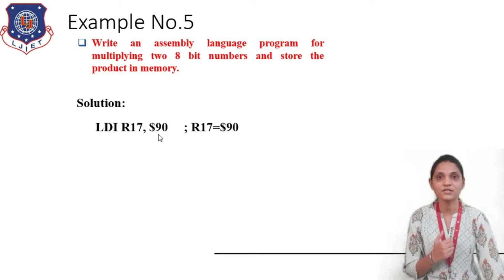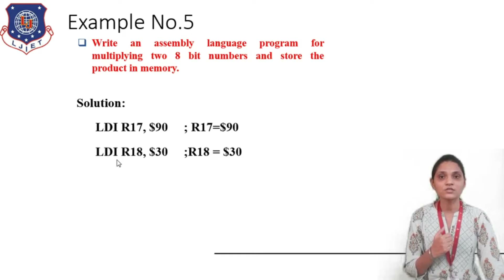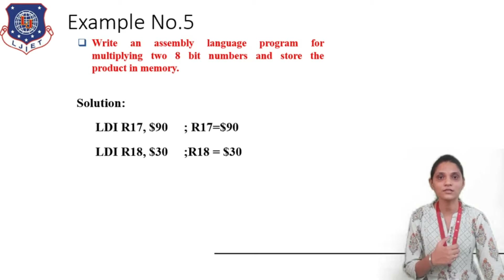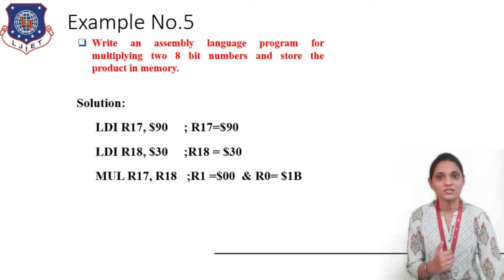So the first instruction is LDI R17, 90. This 90 is going to be stored inside register R17. Then we can use a second register for storing the second data, and for this we are using LDI R18, 30. This will store 30 into register R18.